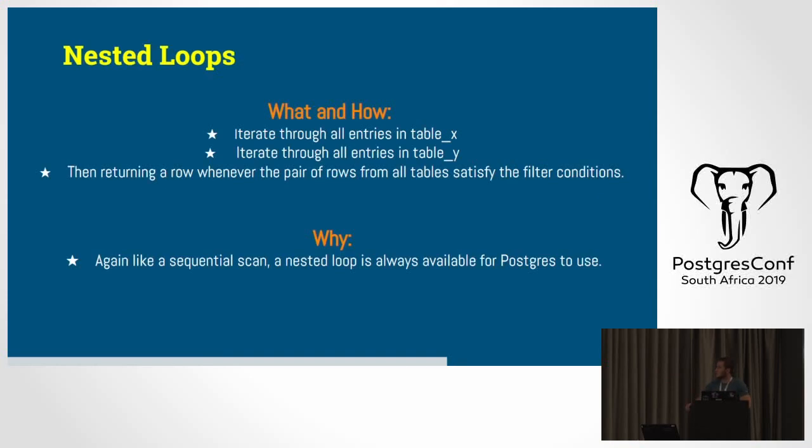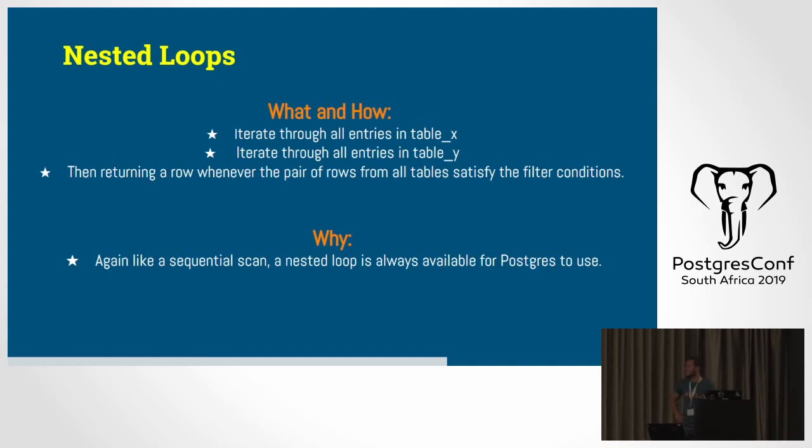So nested loops. How a nested loop works is it iterates through all the entries in table X, or your first table, then iterates through all the tables in entry Y, and then returning a row whenever the pair of rows from all tables satisfy both filter conditions or all filter conditions. Just something to note is that nested loops always join from the left-hand side, or always do a left join. So they join from the left table, always to the right. So if your query is doing a right join internally in the query planner, it will swap those around and handle that for you. So again, like a sequential scan, this is a method that's always available for Postgres to use, but it's not particularly fast. And I can't think really of a use case why this would be a good idea to use.